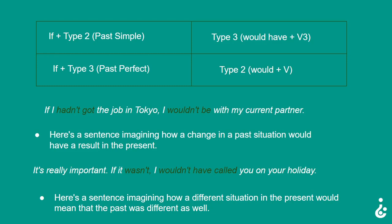'If I hadn't got the job in Tokyo, I wouldn't be with my current partner.' Here is a sentence imagining how a change in a past situation would have a result in the present. Another example: 'It's really important. If it wasn't, I wouldn't have called you on your holiday.' Here is a sentence imagining how a different situation in the present would mean that the past was different as well.